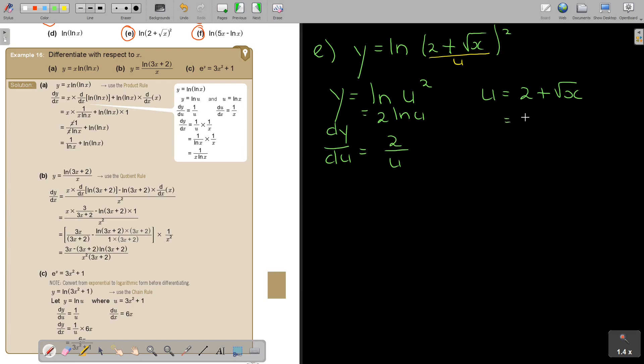And then this one, I just rewrite this quickly as to a half. So du/dx, this is a constant, 0, so this is a half, x, and this is negative a half. And that is 1 over 2x to the power of a half.